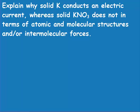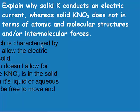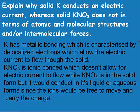Explain why solid potassium conducts an electric current whereas solid potassium nitrate does not. Potassium has metallic bonding, which is characterized by delocalized electrons, allowing electric current to flow through the solid. Potassium nitrate is ionically bonded, which doesn't allow electric current to flow in solid form, but it would conduct in its liquid or aqueous forms since the ions would be free to move and carry the charge.